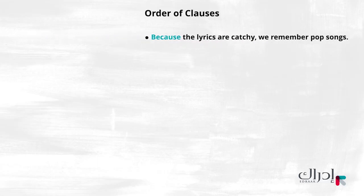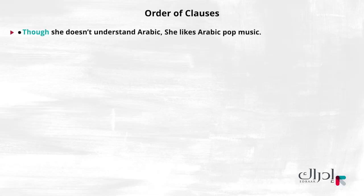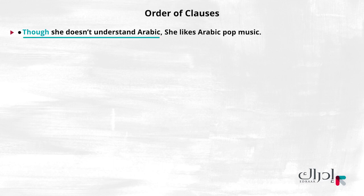Let's look at another sentence, this time with a subordinating conjunction of contrast. Though she doesn't understand Arabic, she likes Arabic pop music. Here, we are giving the contrasting information first — this is the surprising information. We put it first in this sentence to emphasize it. This is why it's important to be able to write sentences with subordinating conjunctions in different ways.